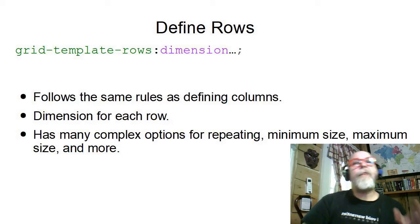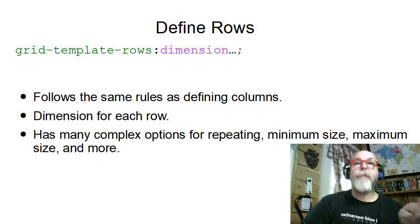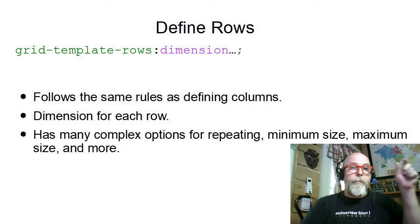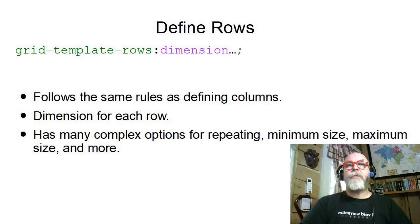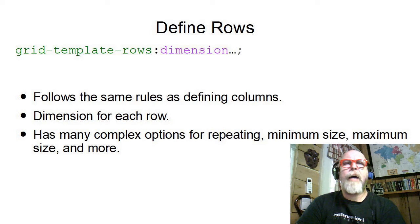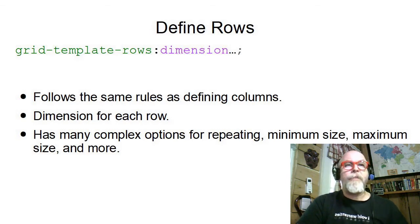To define columns we use grid-template-columns, but to define rows we use grid-template-rows. We put all of the dimensions with a space between each one, and it follows the same rules. There are a lot of really complex things you can do with this — for instance, options for repeating, minimum size, and maximum size. Please consult the documentation online for that, as it's beyond the scope of this brief introduction.